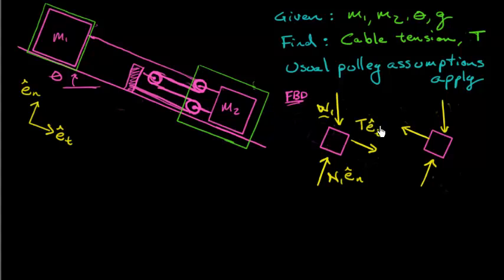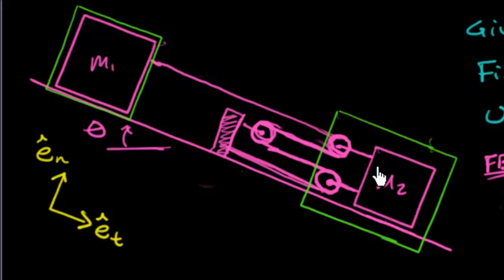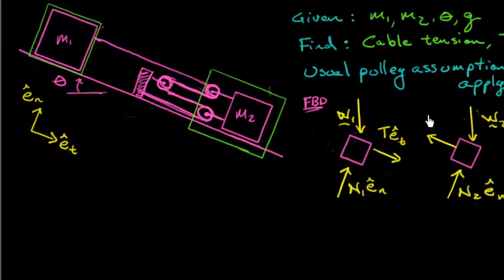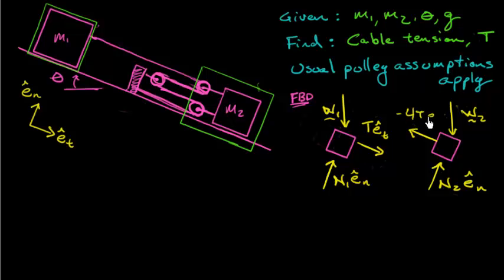Now for block number two, I'm going to consider block number two everything inside this green rectangle here. So that includes these two pulleys there. I've got weight of block number two pulling down, I've got normal force on block number two pushing in the e hat n direction. Notice with my rectangular block here, this one has four tensions attached to it, one, two, three, four. It's the same rope as this one attached to m1, so I have four tensions pulling in the minus e hat t direction.